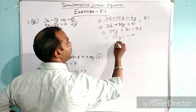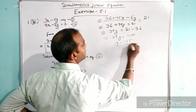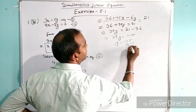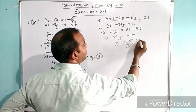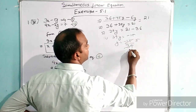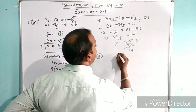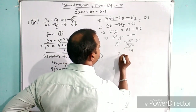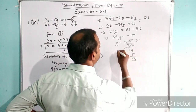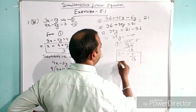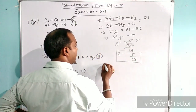So y equals minus 15 by 39. We simplify by cutting by 3: 3 fives are 15 and 3 thirteens are 39, so the answer for y is minus 5 by 13. This is our y value.